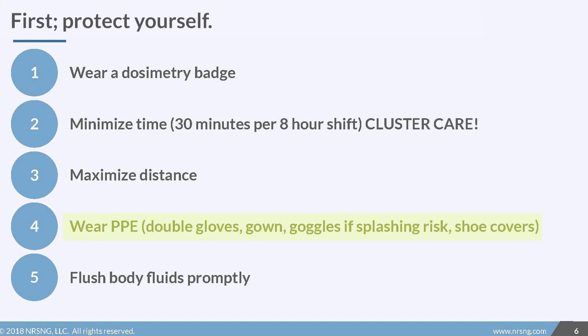Appropriate PPE for being exposed to a radiation patient includes double gloving, wearing a gown, wearing goggles if there's a risk of getting body fluids splashed, and shoe covers. And finally, we're going to have to flush body fluids promptly. If the patient is using a urinal, we're going to have to take that and flush it right away because that will have radiation contained in it, and we need to get it out of the room.